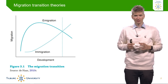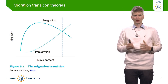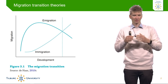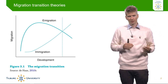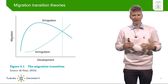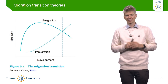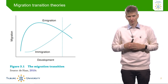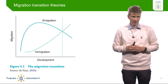Migration transition theories get into a different direction from those classical theories. The previous classical theories start from the idea that migration and development tend to be linear — so the more developed a country becomes, the less likely it is that people migrate out of that country. Migration transition theories argue that this is actually much more complex and that we should fundamentally consider the relationship between development and international migration as a non-linear relationship.